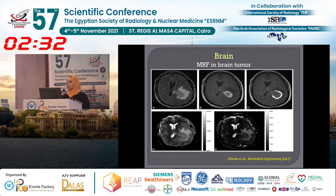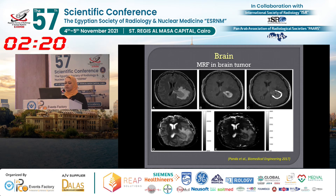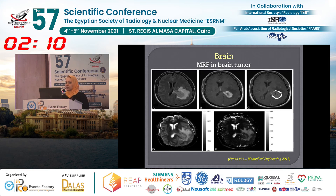MRF can also be used to characterize and differentiate between different intra-axial brain tumors. This is an example of MRF applied to glioblastoma, where comparing the quantitative T1 and T2 maps showed that the mean T1 and T2 values of the solid portion of the tumor were lower than those of the peritumoral region.